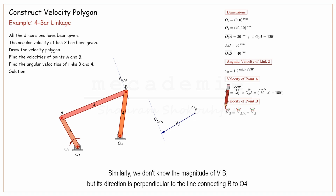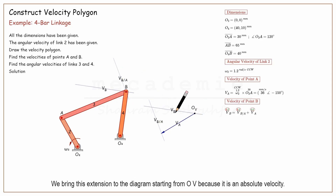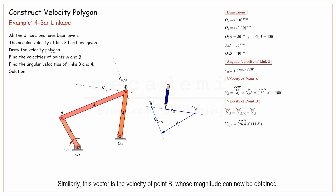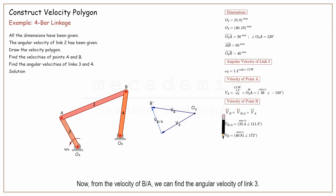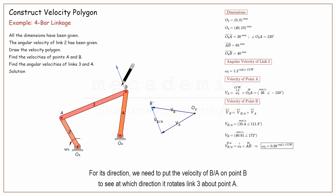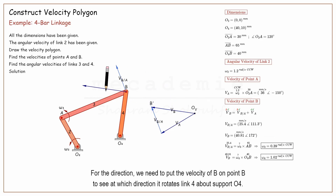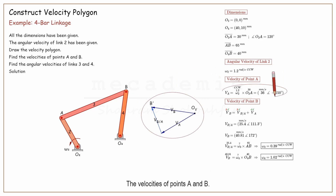Similarly, we don't know the magnitude of VB, but its direction is perpendicular to the line connecting B to O4. We bring this extension to the diagram starting from OV, because it is an absolute velocity. Let's call the intersection as point B'. This vector is the velocity of B with respect to A, whose magnitude we can measure. Similarly, this vector is the velocity of point B, whose magnitude can now be obtained. Now from the velocity of B with respect to A, we can find the angular velocity of link 3. For its direction, we need to put the velocity of B with respect to A on point B to see at which direction it rotates link 3 about point A. Similarly, from the velocity of B, we can find the angular velocity of link 4. For the direction, we need to put the velocity of B on point B to see at which direction it rotates link 4 about support O4. So here is the velocity polygon, the velocities of points A and B, and the angular velocities of links 3 and 4.